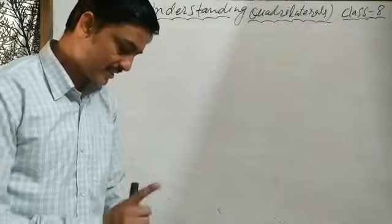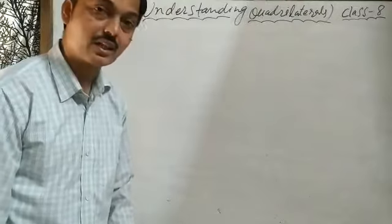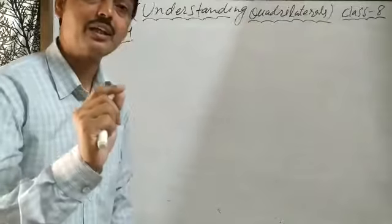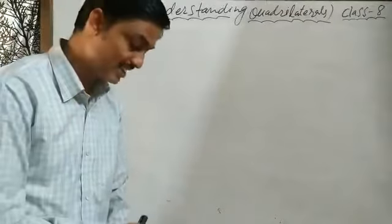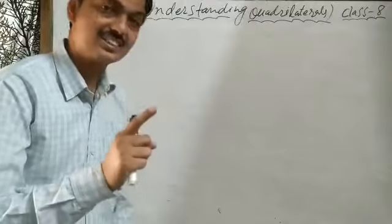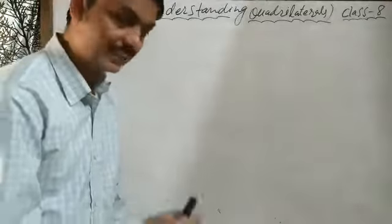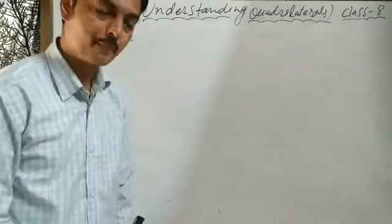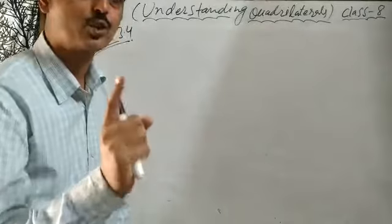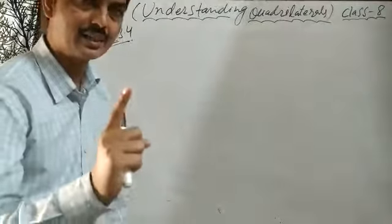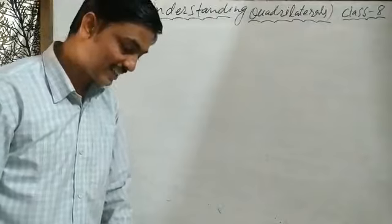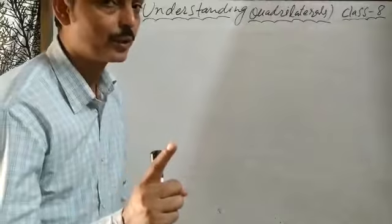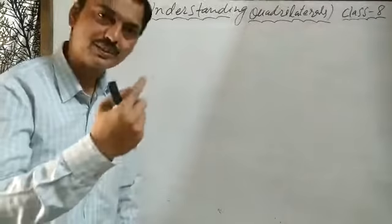The first question is a true or false question. The first statement is: all rectangles are squares. False. You have to justify why this statement is true or false. I will explain the reasons. All rectangles are squares? No — false. Because in a square, all four sides are equal. But in a rectangle, opposite sides are equal.